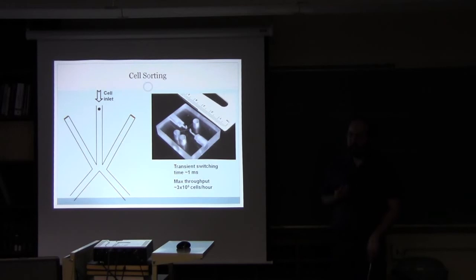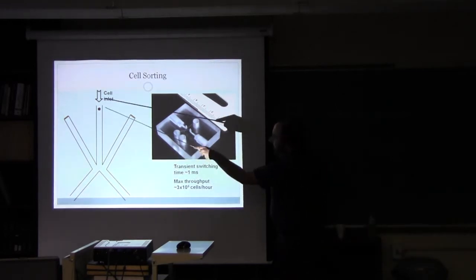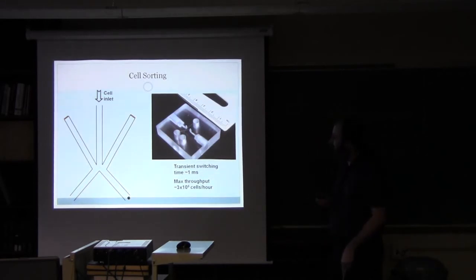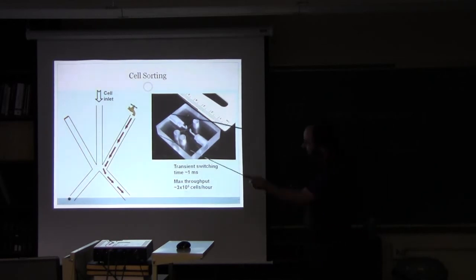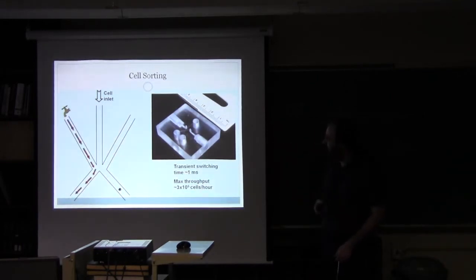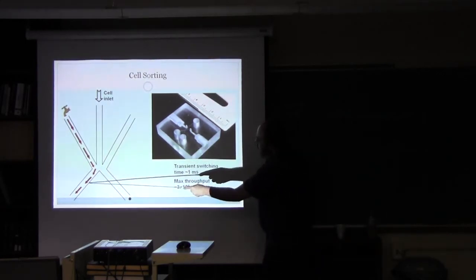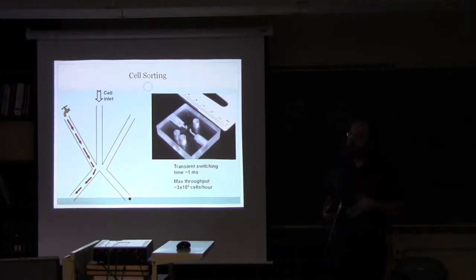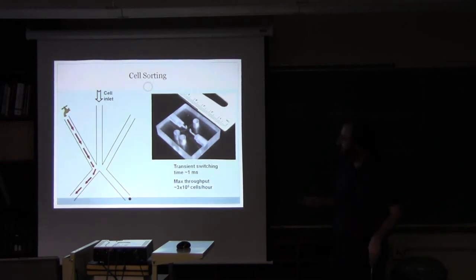We want to do it using microfluidics. Our collaborators at Mechanical Engineering have developed this system for cell sorting. You have these cross channels here. Cells come from the top and then they go arbitrarily into the right channel or the left channel. What you can do is add fluid flow in one of the channels and then the cells will always go in the opposite direction. You can do this computer controlled, image the cells in this region and then decide into which of the outlets you want them to go. So if you have two populations of cells with different fluorescent stains, you can very easily sort them into two different vials.